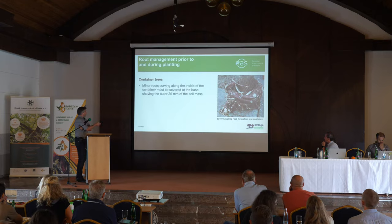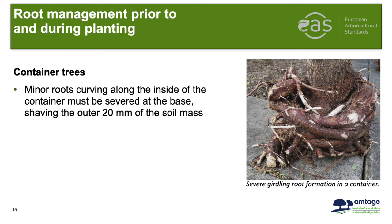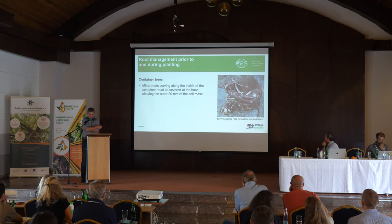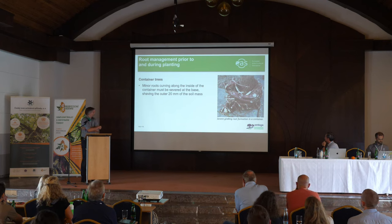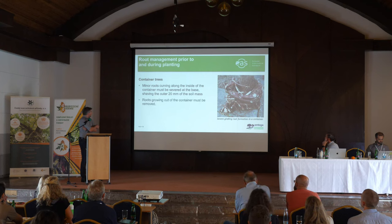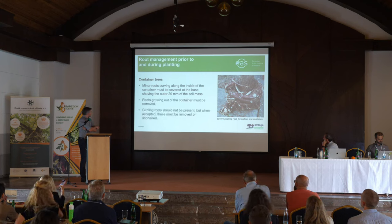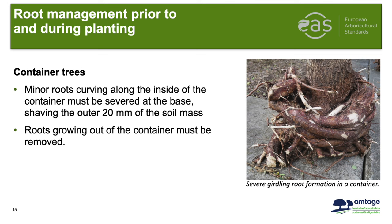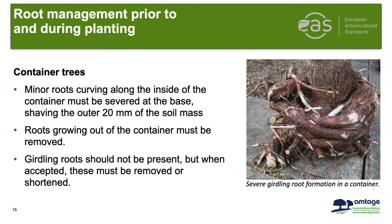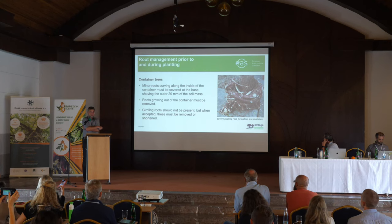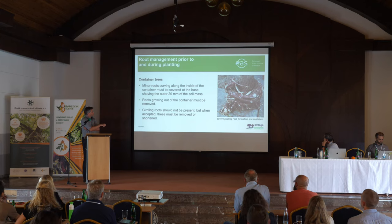For container trees, there is much discussion. Circling roots inside the container must be severed and the outer 20 millimeters of soil mass shaved away. Roots growing out of the container must be removed. Girdling roots should not be present, but if they are, they must be moved and shortened. An example shown here is not acceptable — these roots have been growing in the container for three years.